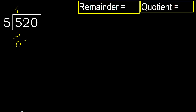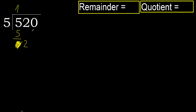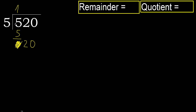Next, bring down. Eliminate the 0 on this side. We get 2, but 2 is less than 5, therefore move to the next digit, giving us 20. 20 is not less, therefore we work with 20.